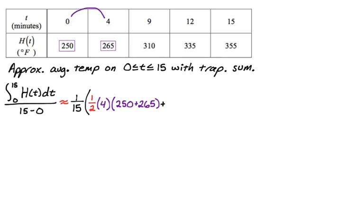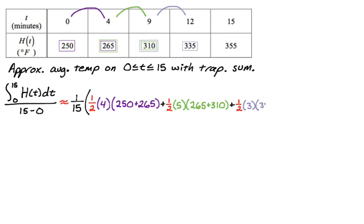Now we add another trapezoid: one half times the height from four to nine, which is five, times the sum of 265 and 310. Then another: one half times three — from nine to 12 — times the sum of 310 and 335. And one more: one half times three — from 12 to 15 — times the sum of 335 and 355. That's the last trapezoid, so we close the parentheses.